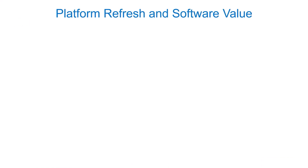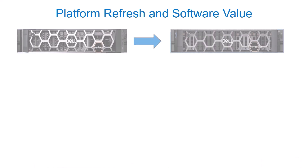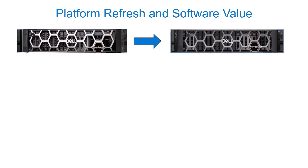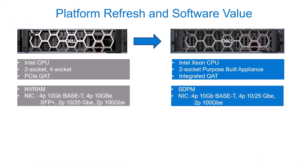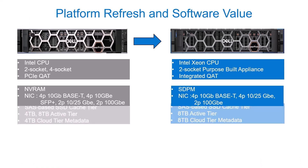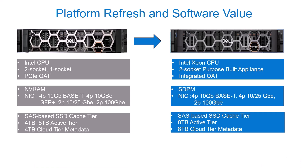Here's a view on the platform refresh and the software value it brings. The next generation PowerProtect Data Domain models, DD-9410 and DD-9910 controllers, are built on a 2U platform with dual socket supporting Intel Xeon CPUs. We now have integrated QAT (Q80) unlike in previous generation models where we had a Q80 PCI card. Also, with SDPM, we leverage a Dell solution which replaces the NVDIMM hardware existing in previous generation models. The new models are based on dataless head architecture, which does not store any user data on the head unit's internal drive.